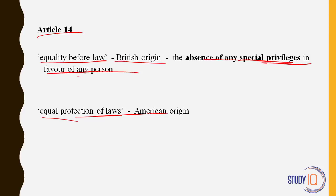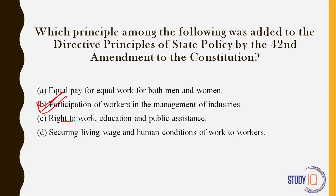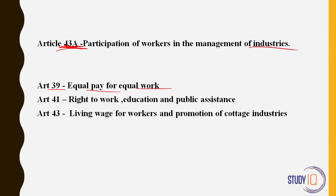Which principle was added to the Directive Principles of State Policy by the 42nd Amendment — the mini-constitution brought by Indira Gandhi in 1976 during the Emergency? Equal pay for equal work for men and women — this was there earlier under Article 39. Participation of workers in the management of industries — yes, this was brought by the 42nd Amendment, added as Article 43A. Right to work, education and public assistance — also there previously under Article 41. Living wage for workers — under original Article 43. The answer is participation of workers in management of industries.